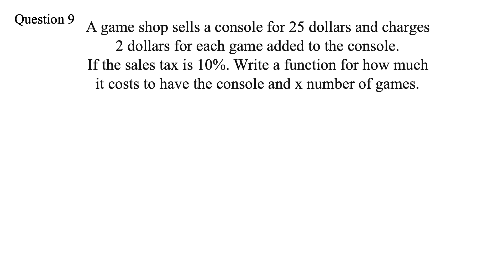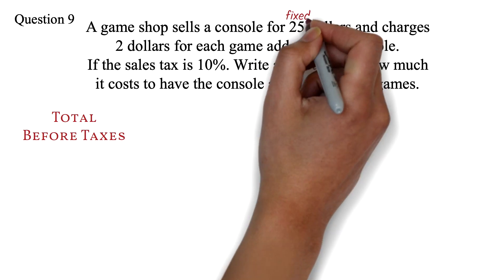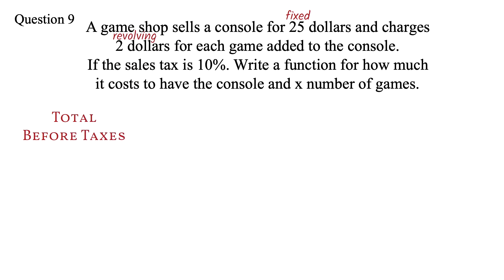Question 9: Same scenario — a console for $25 and $2 per game, 10% sales tax. Write a function for how much it costs to have the console and x number of games. The $25 is the fixed value and the $2 is the revolving value, giving us 25 plus 2x before tax. When you see 'per game' or 'per hour,' that value goes with the x.